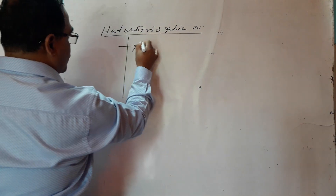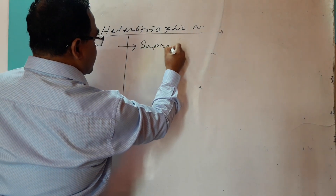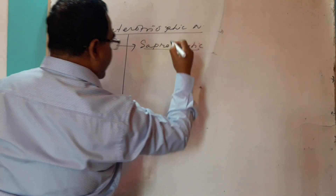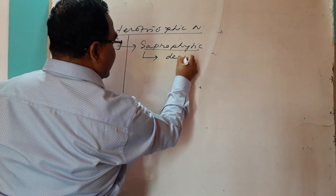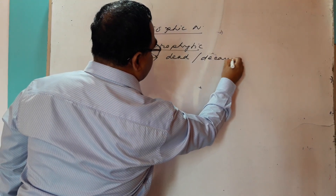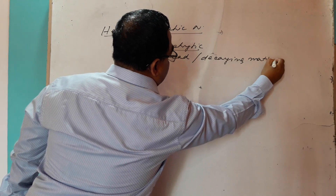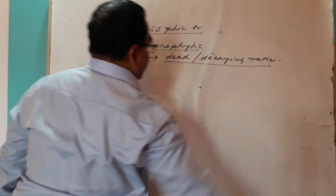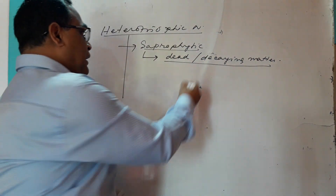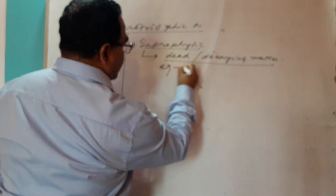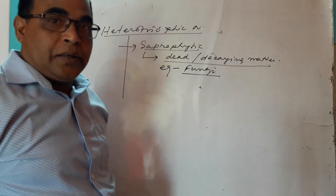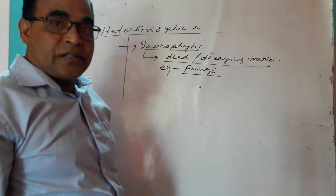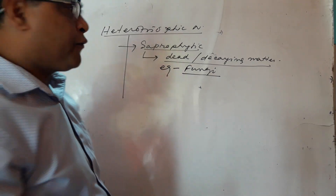The first type is saprophytic nutrition. Saprophytic means the organism feeds on dead and decaying matter. Some organisms obtain energy from dead and decaying substances. The example is fungi — all fungi get their food from dead and decaying matter. So they are called saprophytes and their nutrition is called saprophytic nutrition.